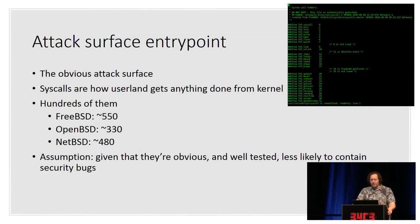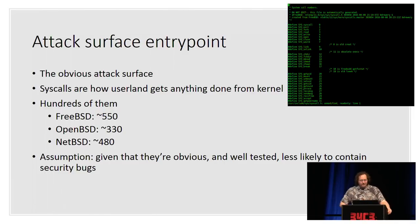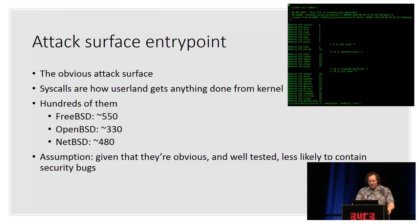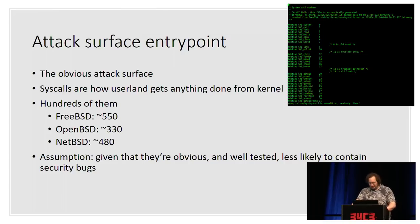Let's dive into system calls — obviously this is prime attack surface. If you're looking for security bugs, the first thing you want to look at is system calls because that's where user space talks to the kernel. Among the three big BSDs, there's a difference in the number of system calls implemented: FreeBSD has well over 500, NetBSD has almost 500, and OpenBSD has about 300 and change. So right there, there's a clear difference in attack surface. My assumption was that because they're so obvious and well-tested, they're less likely to contain security bugs.